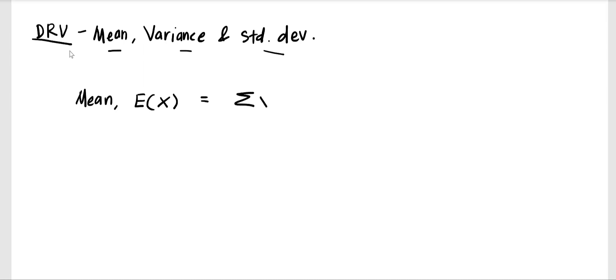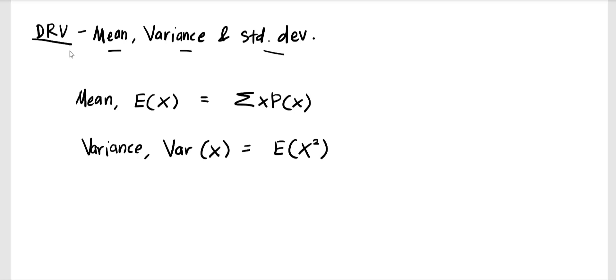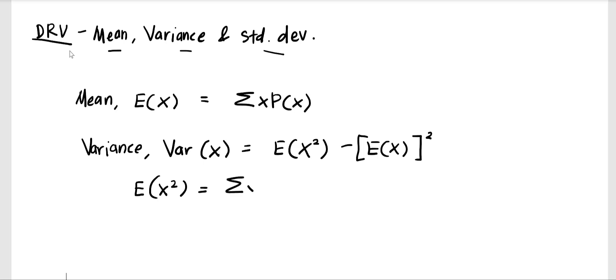The formula for mean is the summation of x times the probability of x. For variance, the notation is Var(X) and the formula is E(X²) minus E(X) squared. The formula for E(X²) comes from the summation of x² times the probability of x.